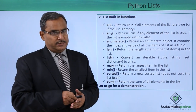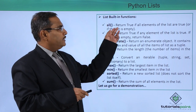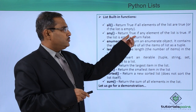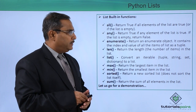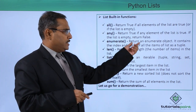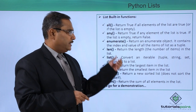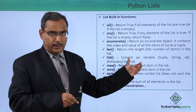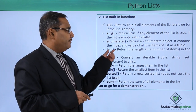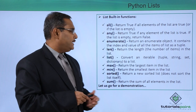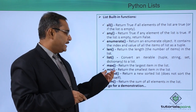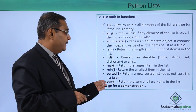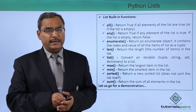The list built-in functions include: all(), which returns True if all elements of the list are true; any(), which returns True if any element of the list is true; enumerate(), which returns an enumerate object containing the index and value of items as tuples. len() returns the number of items in the list. We also have max(), min(), sorted(), and sum() — these are the built-in functions applicable on a list.